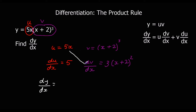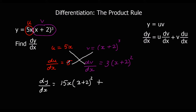Now we can work out dy/dx by doing u times dv/dx plus v times du/dx. So that's 5x times 3(x+2)² — giving us 15x(x+2)² — plus v times du/dx. That is dy/dx and that will be our answer.